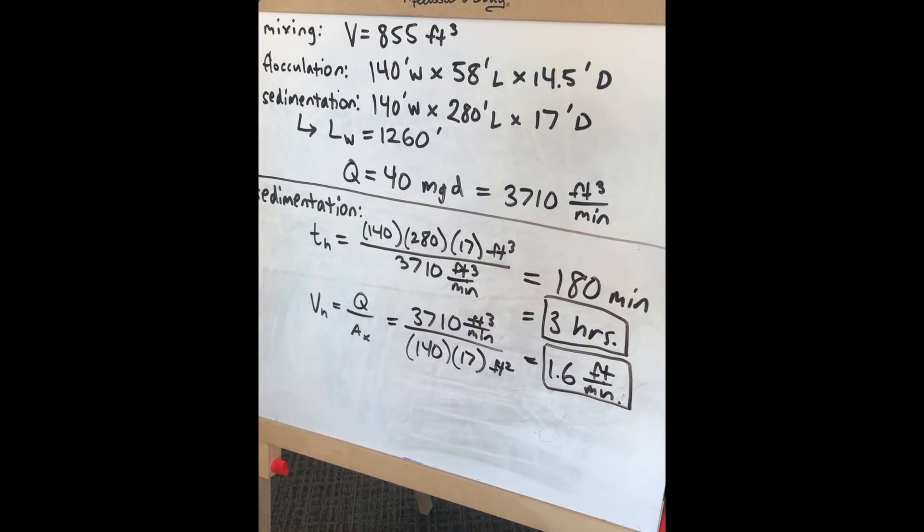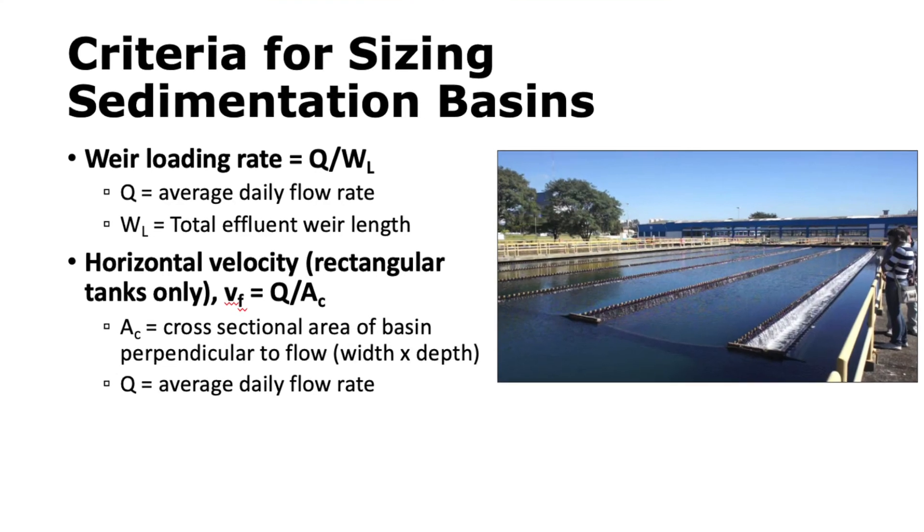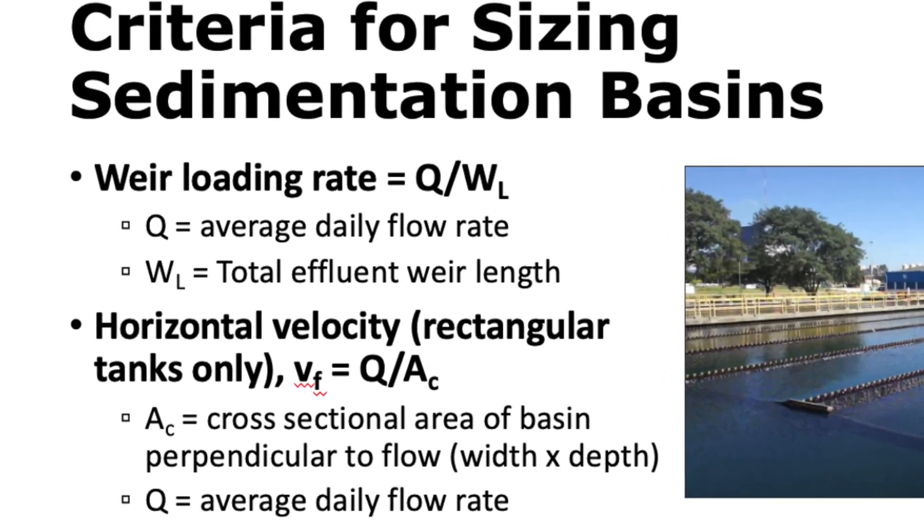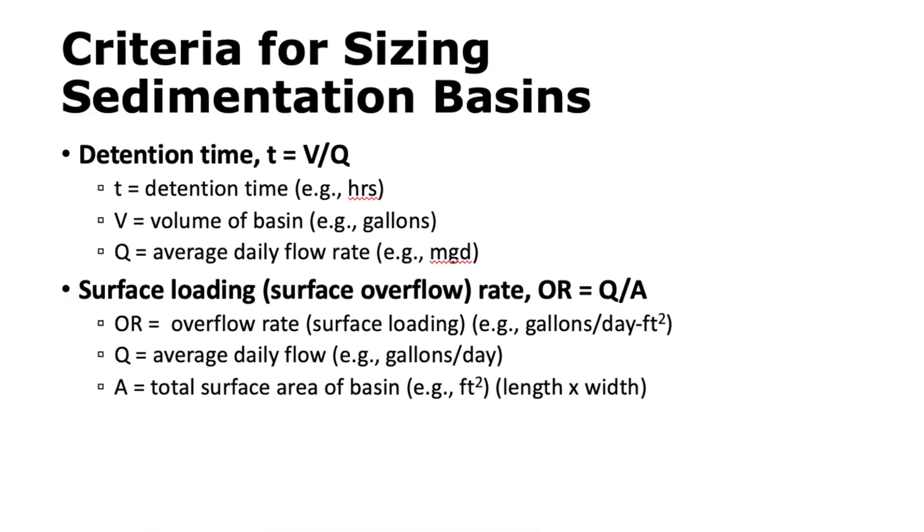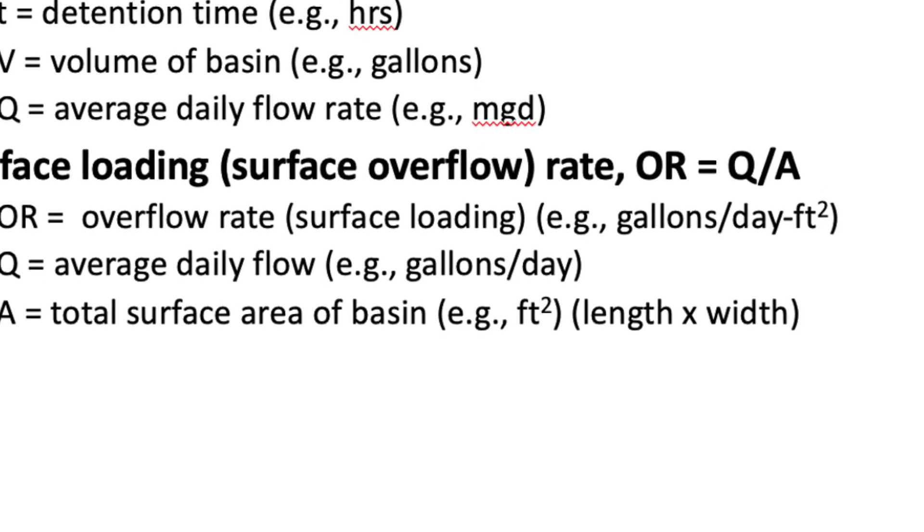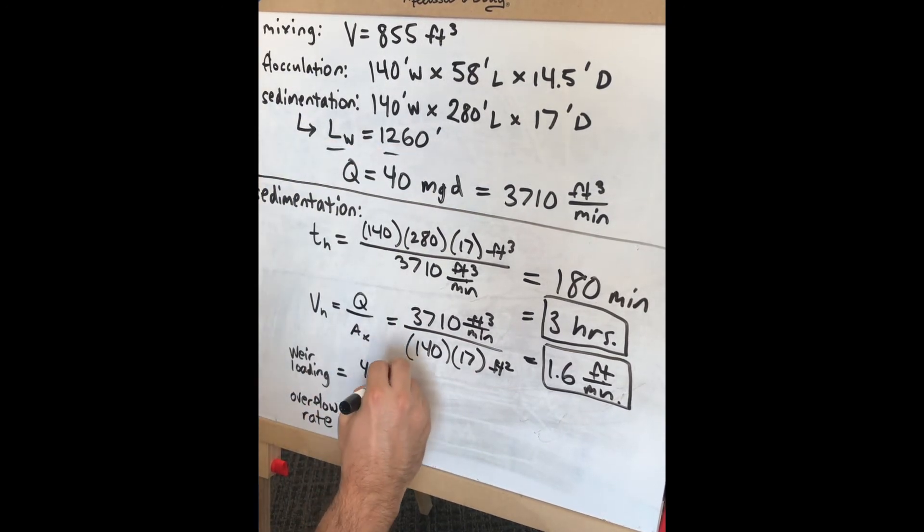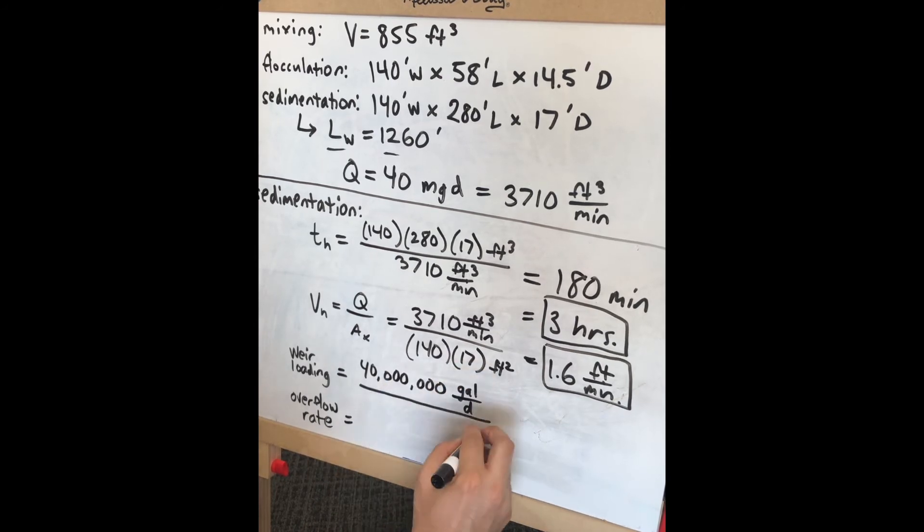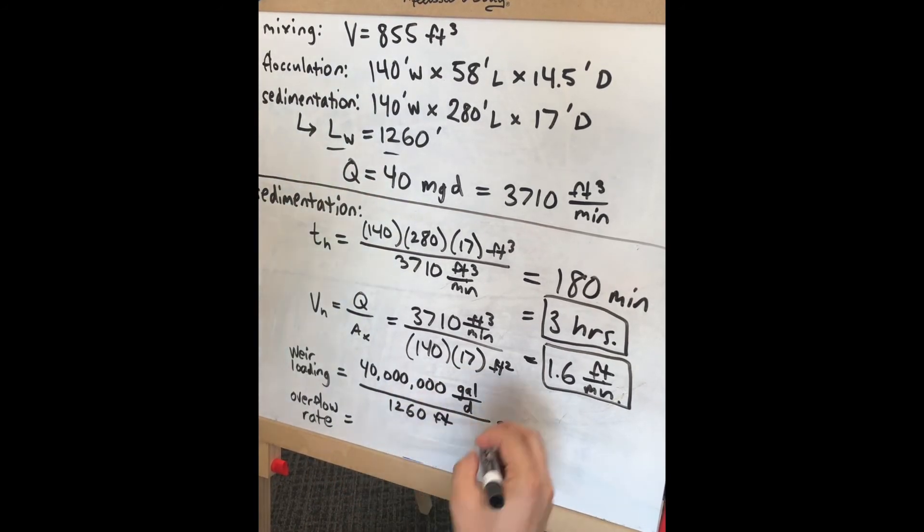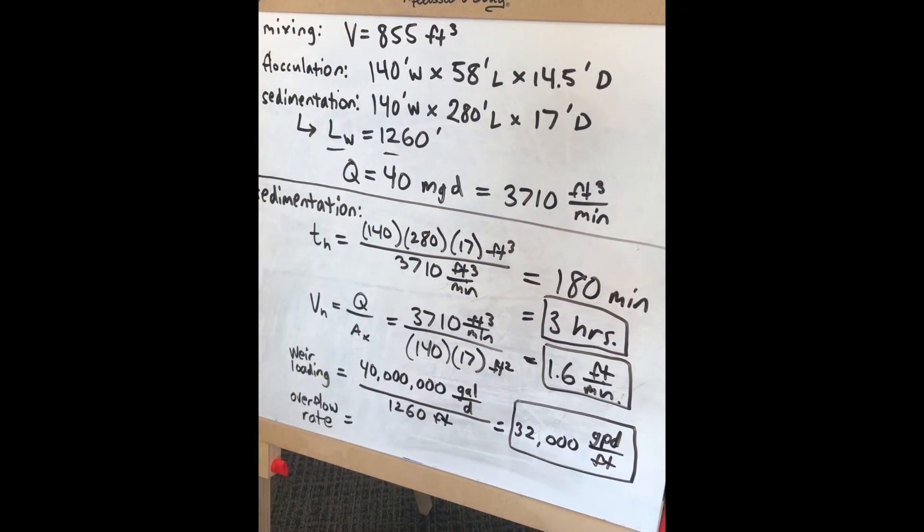For sedimentation basins, we also calculate two additional parameters: weir loading rate and overflow rate. The weir loading rate equals the flow rate divided by the weir length, giving 32,000 gallons per day per foot.